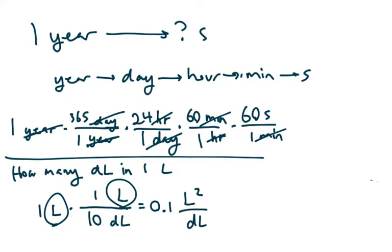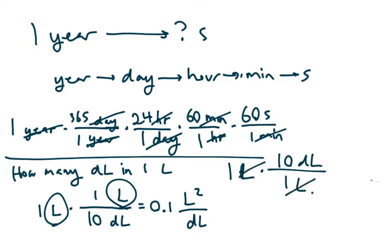We should have done one liter times 10 deciliters over one liter. These liters now cancel out because liter divided by liter equals one, and then we correctly get 10 deciliters. That's how to do error checks in your unit conversions.